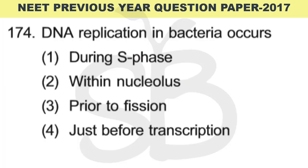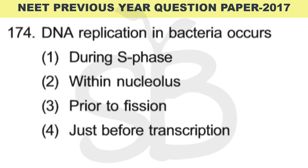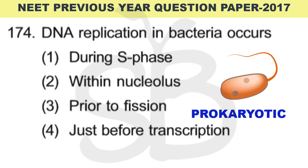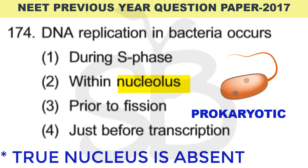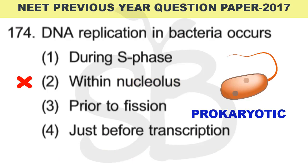Question number 174: DNA replication in bacteria occurs when? Bacteria is a prokaryotic organism with no true nucleus, so we eliminate the option 'within the nucleus.' Prokaryotes also do not show a well-marked S-phase due to their primitive nature, so we eliminate that option too. Bacteria reproduce by binary fission, and DNA replication occurs prior to fission. The correct answer is option 3: prior to fission.